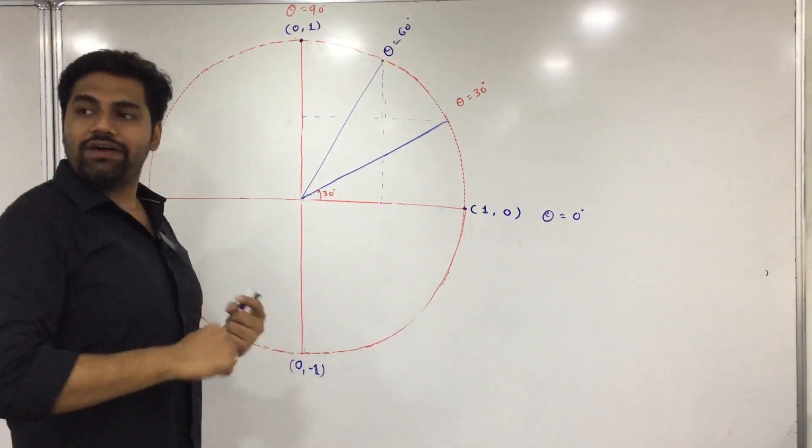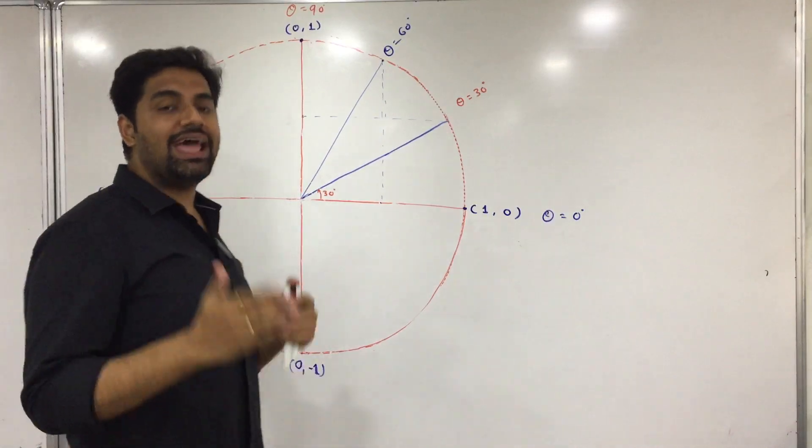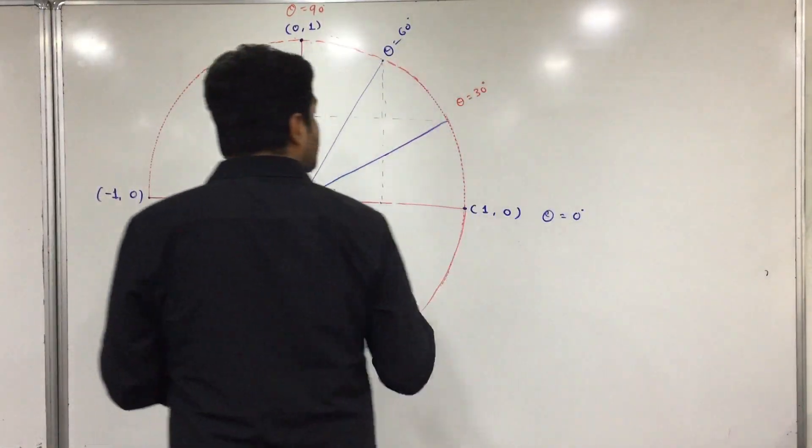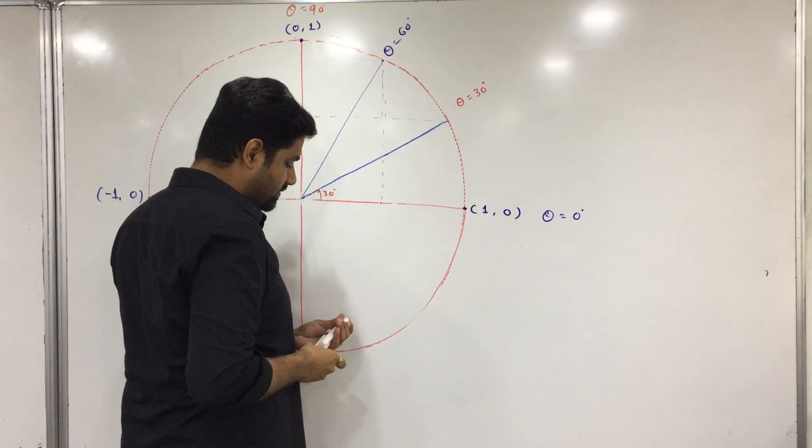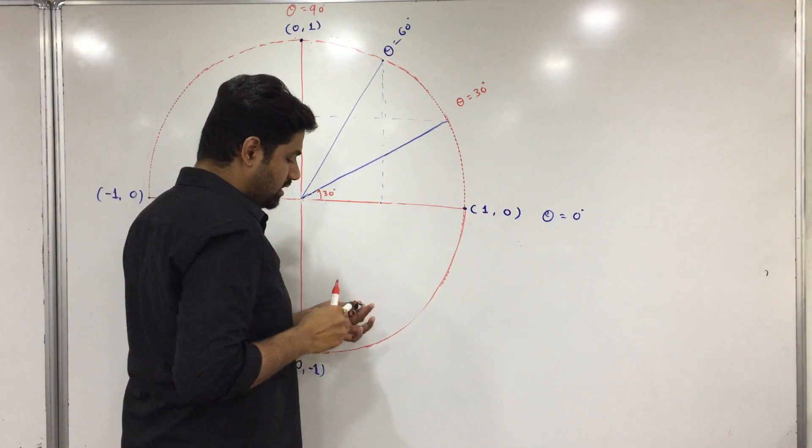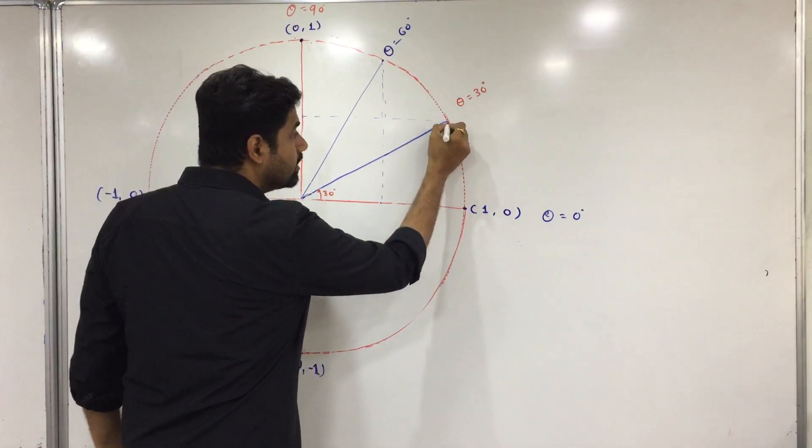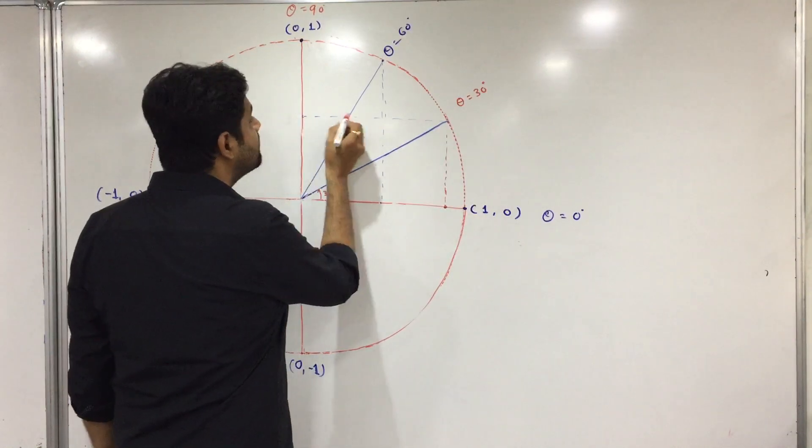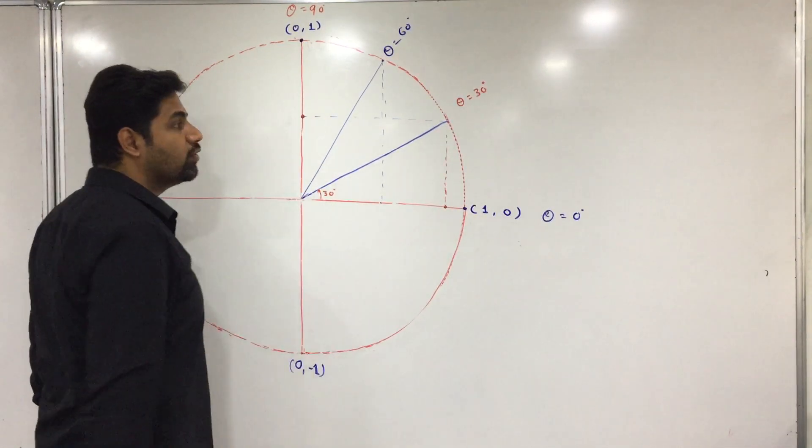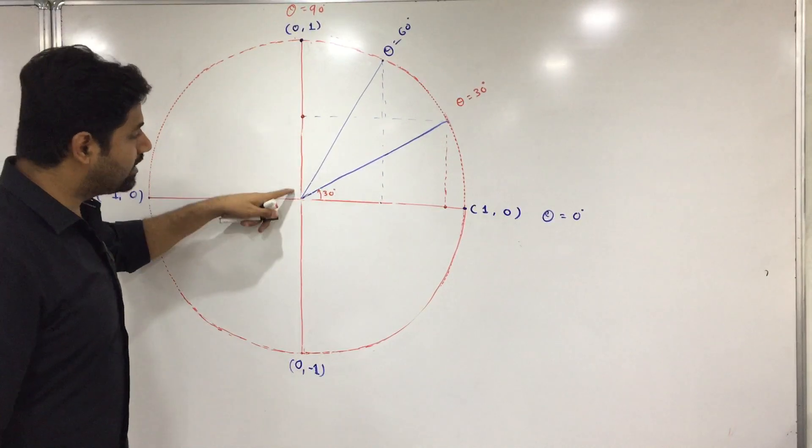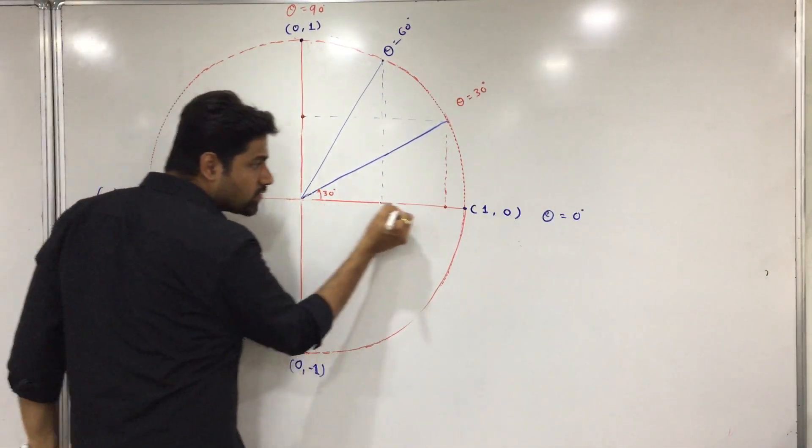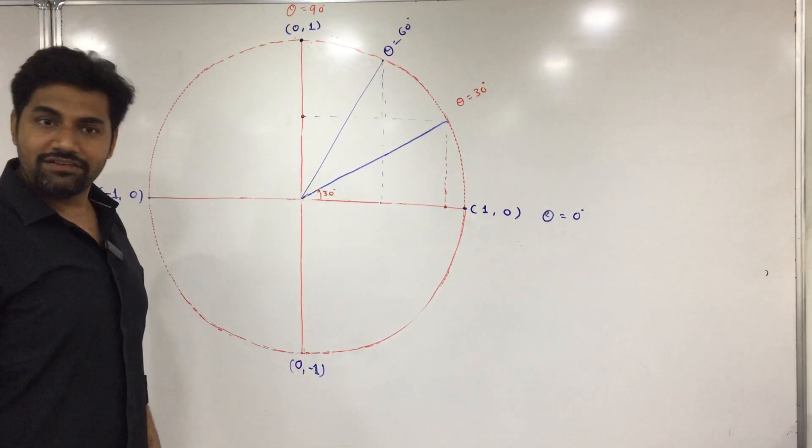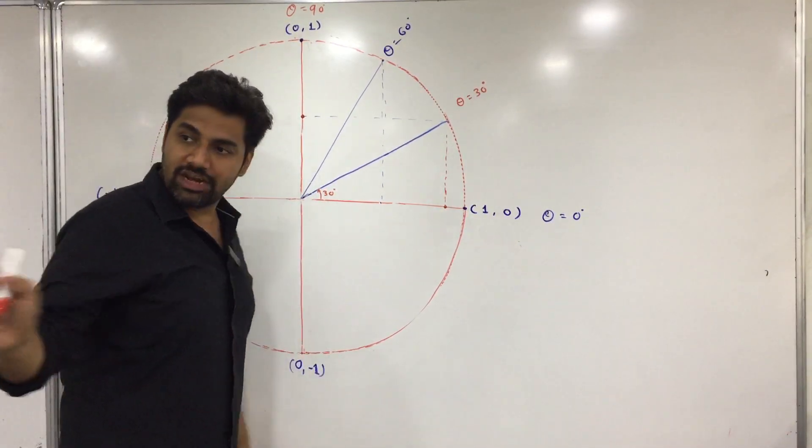Now we understood this theta. Now we have got x coordinate and y coordinate to calculate. How do we do x coordinate and y coordinate? This becomes the x coordinate. This becomes the x coordinate. And this becomes the y coordinate. This point, this is x coordinate and this much is y coordinate. This is x coordinate, this is y coordinate.